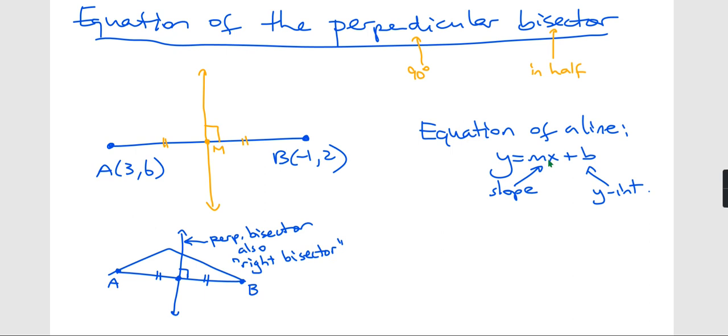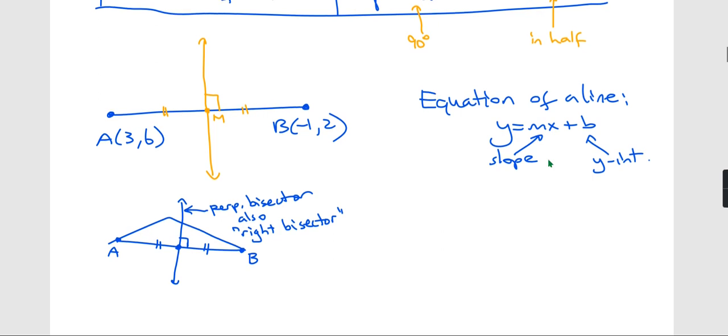Right now, we don't have either of them, so we're going to need to use the information that we're given. What is one thing we know? We know that the perpendicular bisector is perpendicular to the line segment, and we know about slopes of lines that are perpendicular.